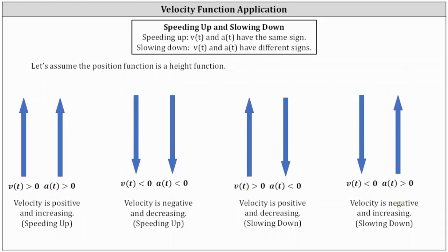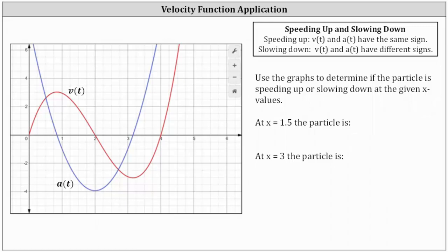So now going back to our problem, let's first locate the points on the velocity and acceleration functions where x equals 1.5. The point on the velocity function when x is equal to 1.5 is here — notice how the velocity is positive. And the point on the acceleration function when x equals 1.5 is this point — notice how the acceleration is negative. So because the velocity and acceleration have different signs, the particle is slowing down. In this case, the velocity is positive and decreasing.